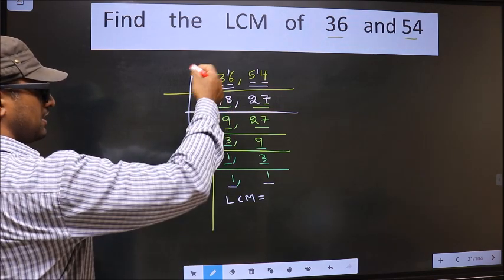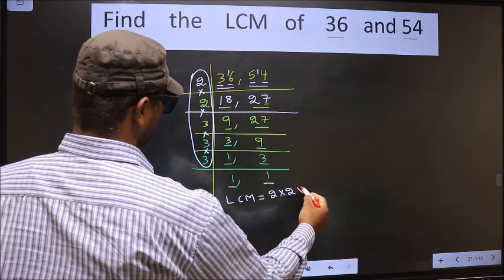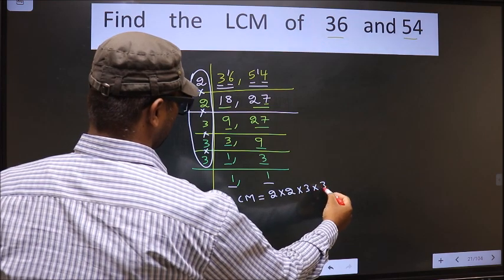Product of these numbers, that is 2 into 2, into 3, into 3, into 3.